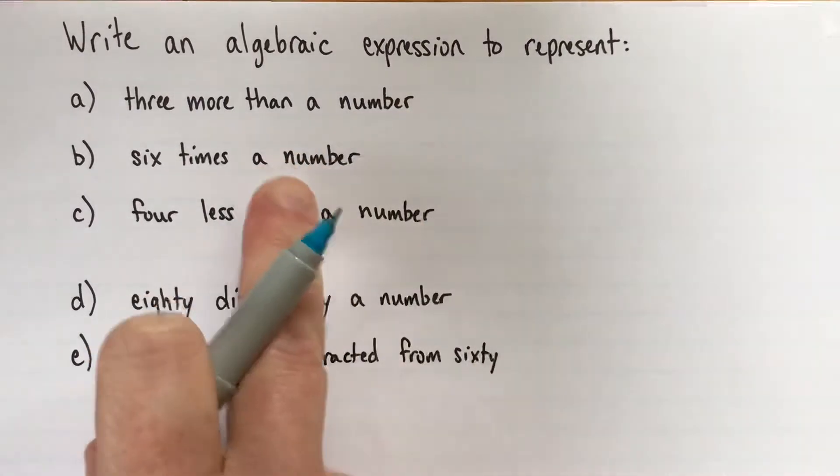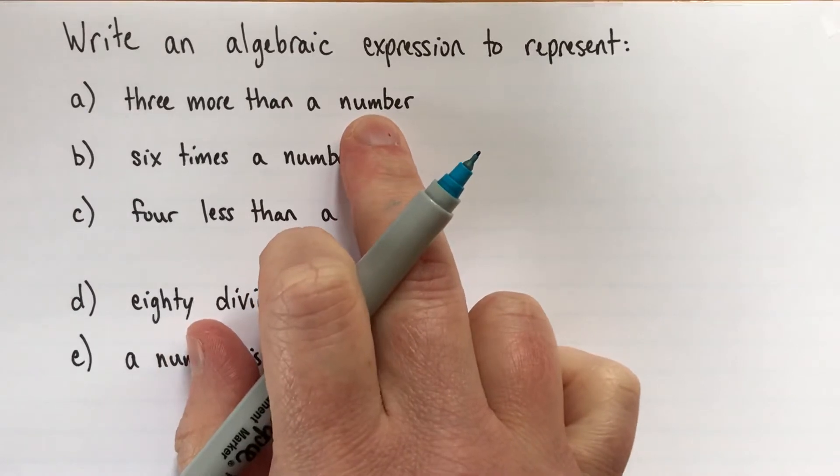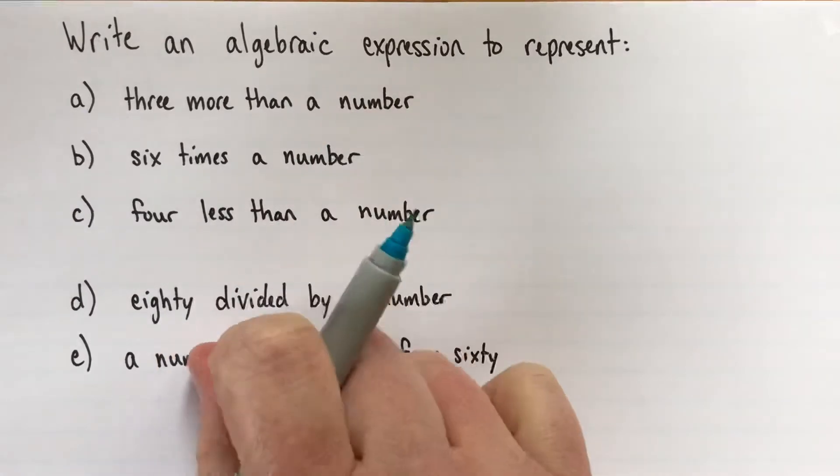So for each of these, it uses the word 'a number,' so I'm going to use n for number. You don't have to, you can use any variable, but why not use n? A number starts with n, you might as well.